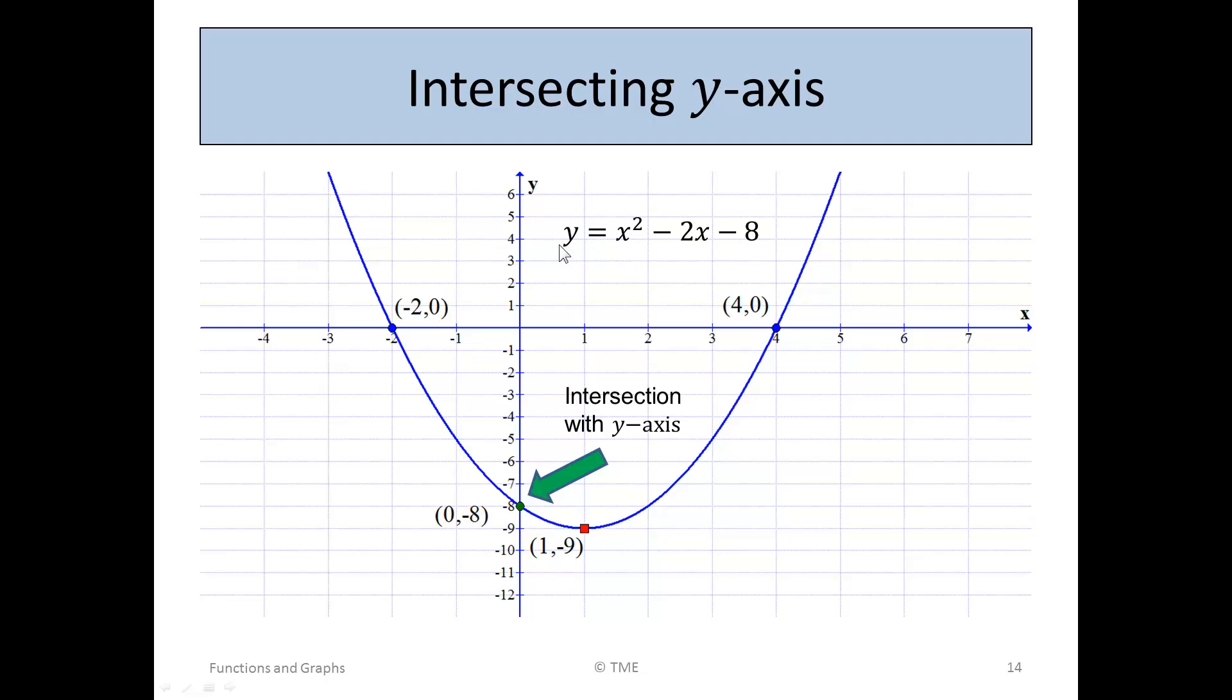Could we find it from the function if we didn't draw the graph? Well, remember that f of x is x squared minus 2x minus 8. And we want, in this case, the x value to be 0.